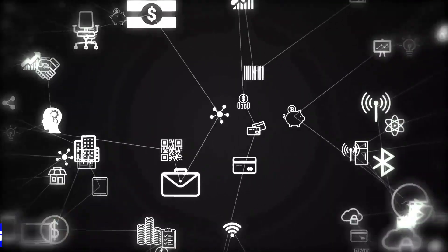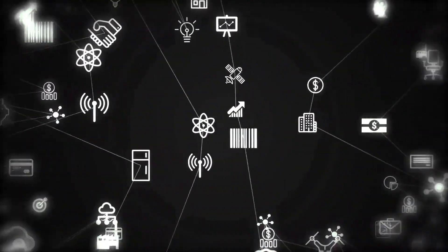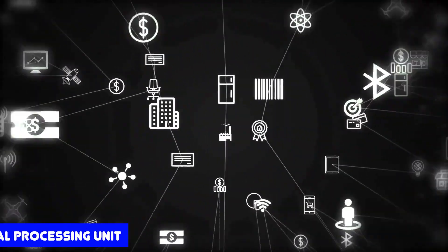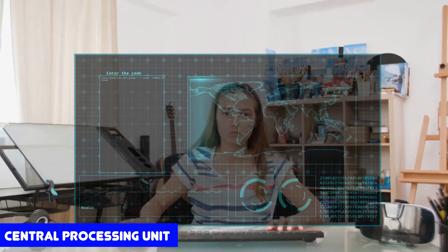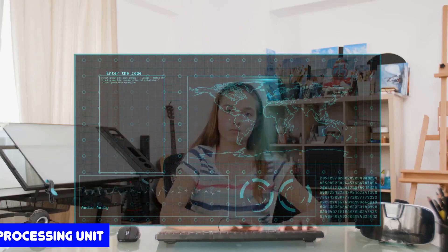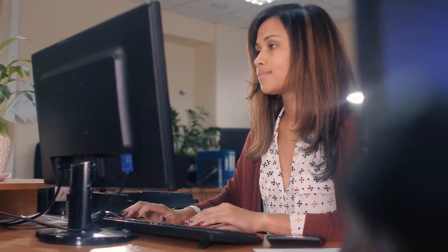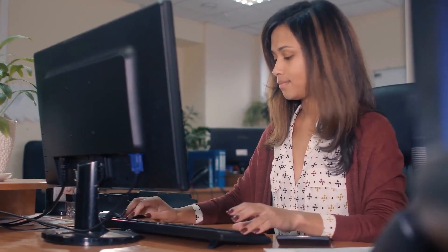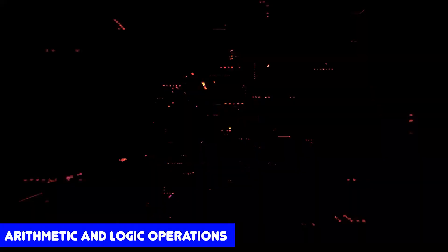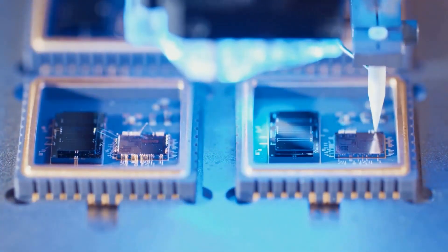Let's start by defining each type of processor. CPU, which stands for Central Processing Unit, is the primary processor that handles all the basic operations of a computer. The CPU performs arithmetic and logic operations and retrieves data from memory to perform tasks.